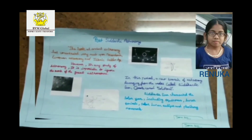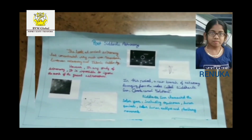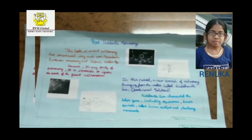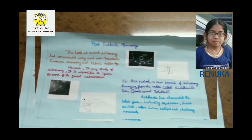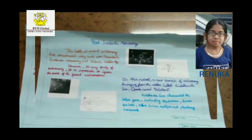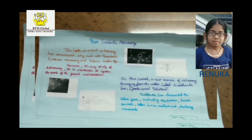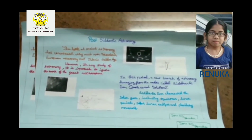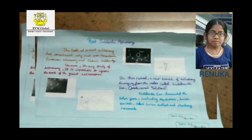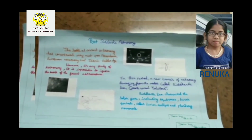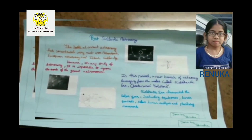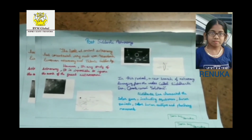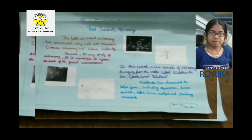The study of ancient astronomy has concentrated very much upon Mesopotamia, European astronomy and Islamic coordinates. However, in any study of astronomy, it is impossible to ignore the work of the great Indian astronomers. In this period, a new branch of astronomy diverging from the Vedas is called the Siddhantic Era. The Siddhantic Era chartered the solar year including equinoxes, lunar period, solar-lunar eclipses and planetary movements.